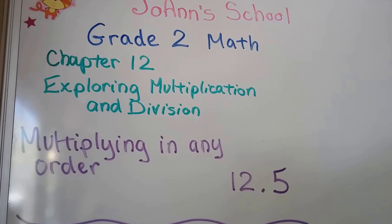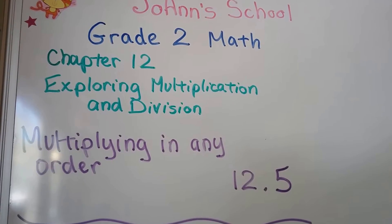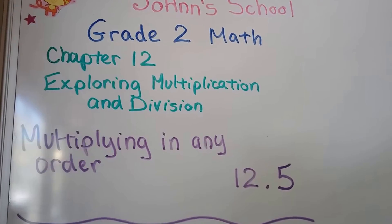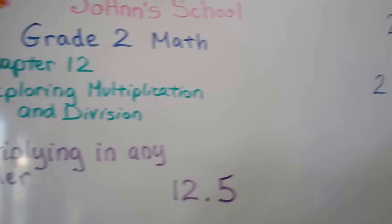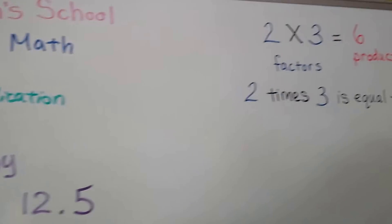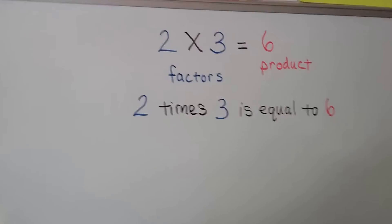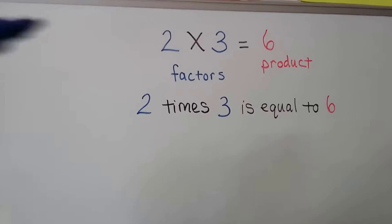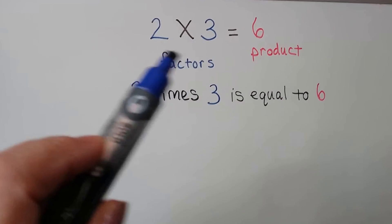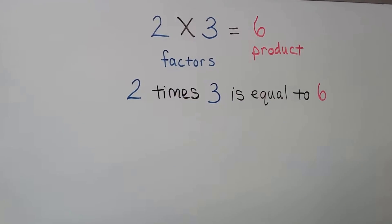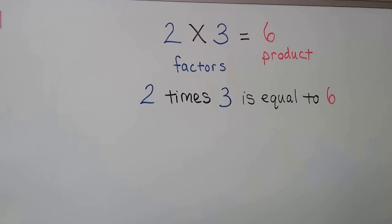We're going to be multiplying numbers in any order. This is lesson 12.5. Remember, two numbers that we multiply together, like 2 times 3, these are factors. And the answer is called the product.